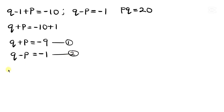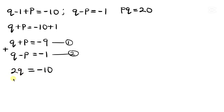Adding equations 1 and 2: q plus q gives 2q, and p terms cancel, so 2q equals negative 10. Dividing both sides by 2, q equals negative 5.